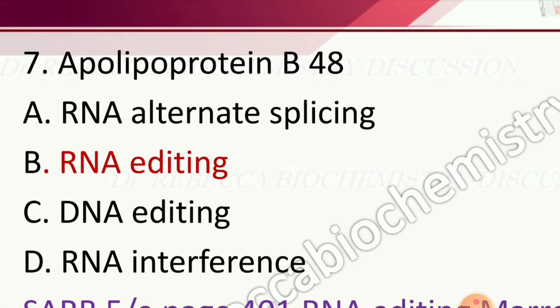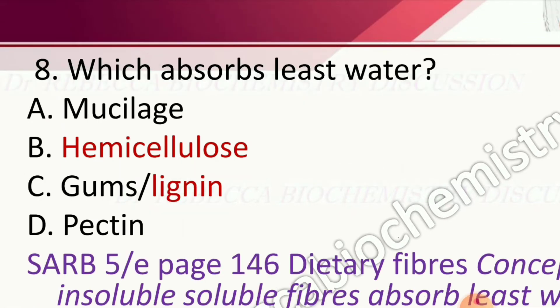Question 7: Apolipoprotein B48 is — DNA editing, RNA interference, RNA editing, or RNA alternate splicing? The correct answer is RNA editing.